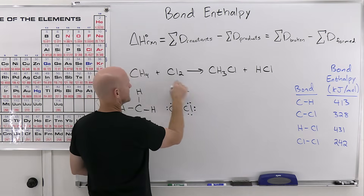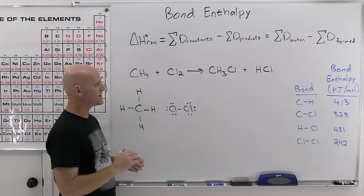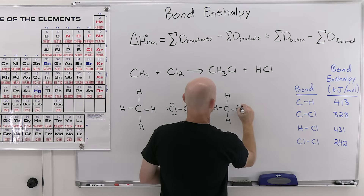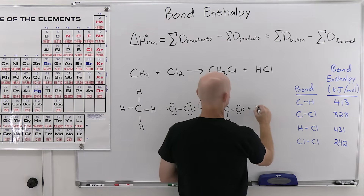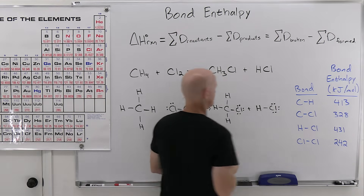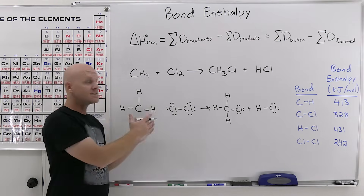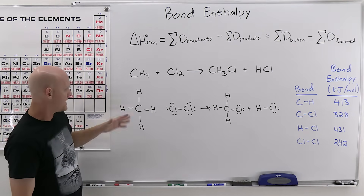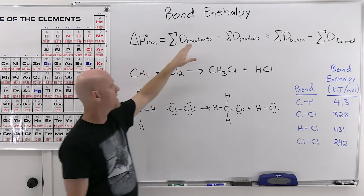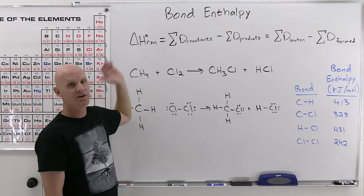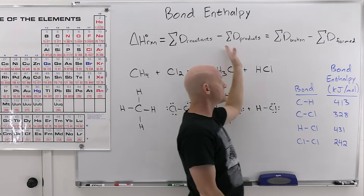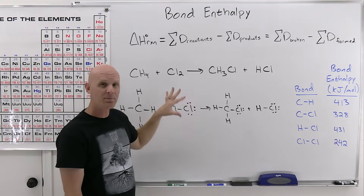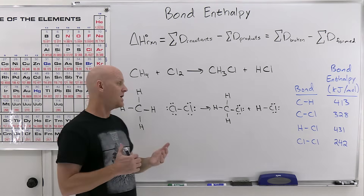For the first example — CH4 + Cl2 → CH3Cl + HCl — I highly recommend drawing out the Lewis structures so you can keep track of all bonds being broken and formed. We can do all the bonds in the reactants minus all the bonds in the products to get delta H. However, you can simplify the calculation in many cases by just doing bonds broken minus bonds formed, since identical bonds appearing on both sides cancel out. We'll do it both ways here.